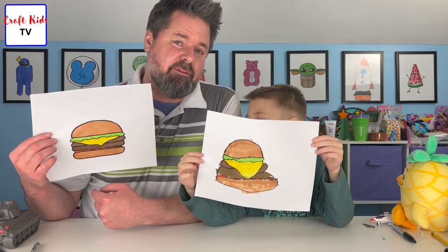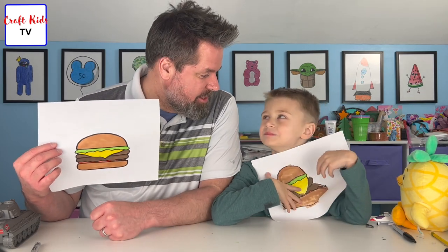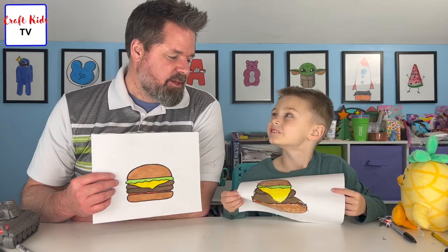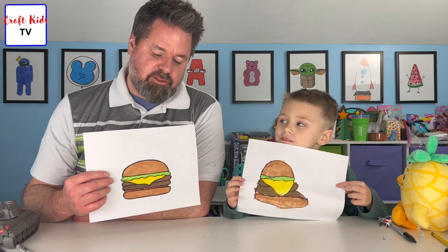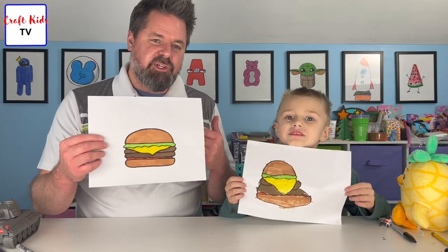These are actually cheeseburgers, but close enough. Odin wanted to draw a picture of a hamburger tonight, but we decided to make it a cheeseburger so it's more colorful. Odin's favorite is just a hamburger with no bun, and that would be pretty boring to draw. So we decided to draw a double cheeseburger with lettuce, cheese, and ketchup.